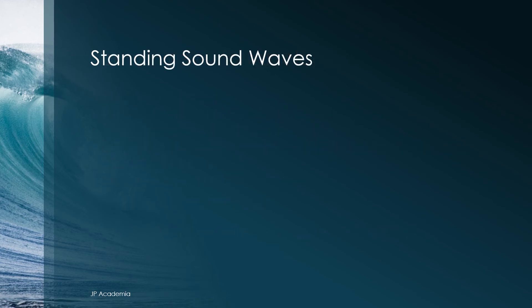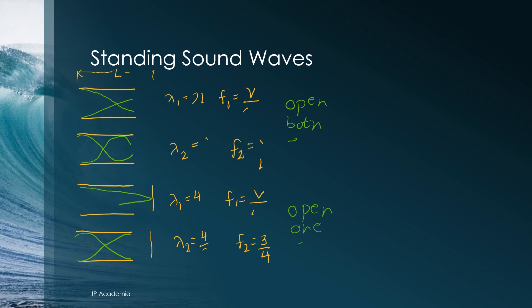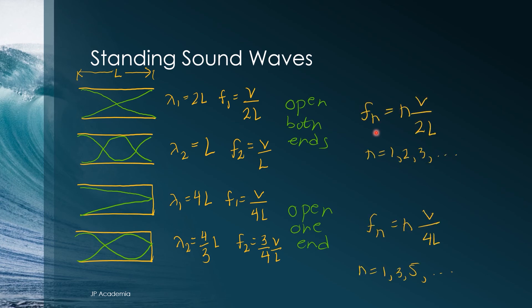Standing sound waves can be generated in a column of air, illustrated by my drawing for the first harmonics and the second harmonics, such as in an organ pipe or in a horn. Longitudinal pressure waves are reflected back when hit an obstruction.